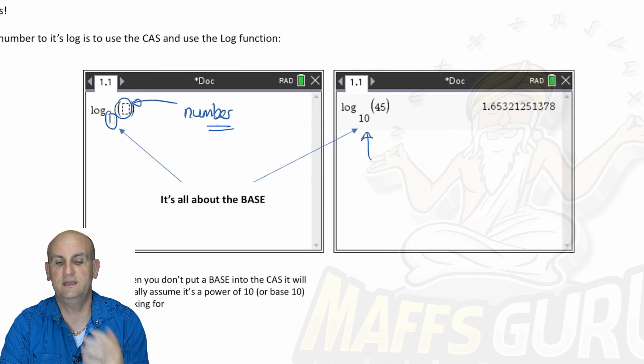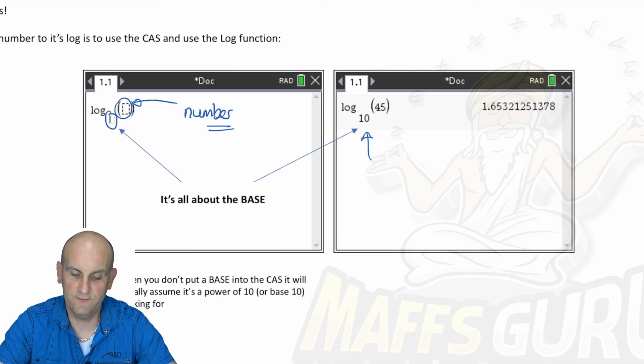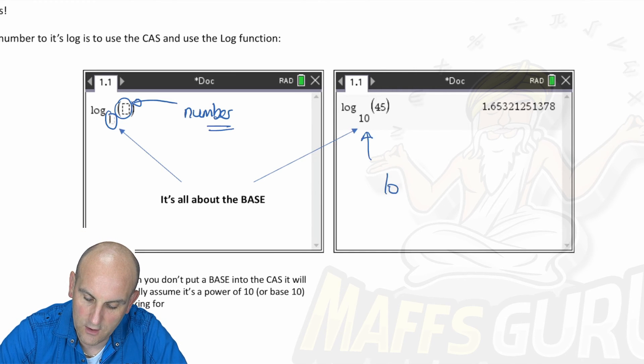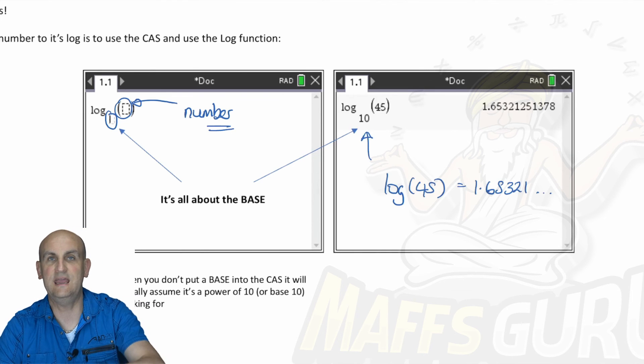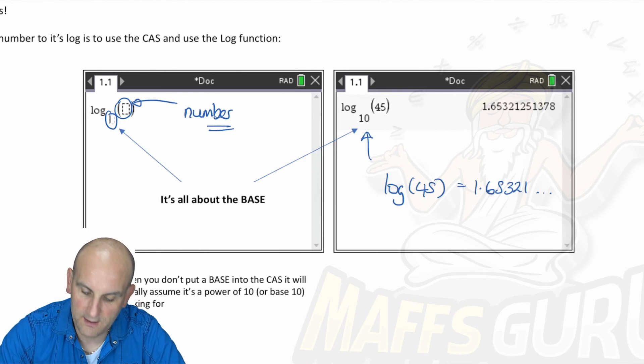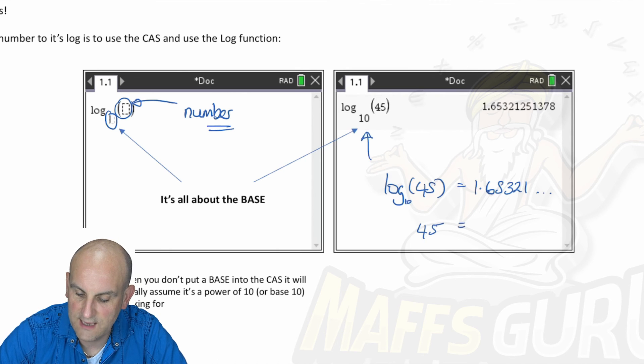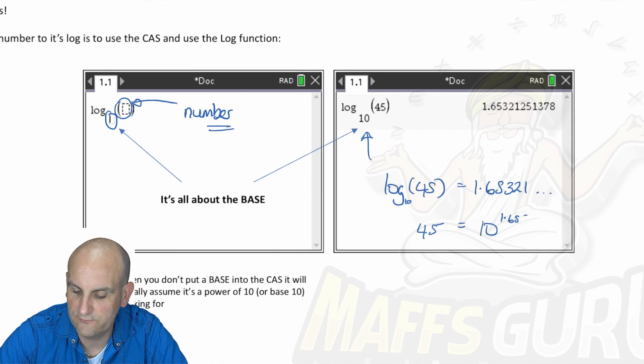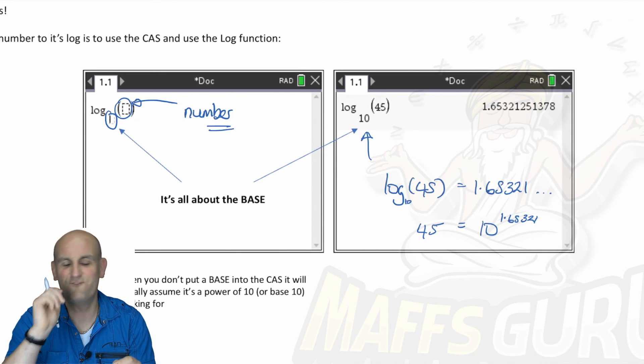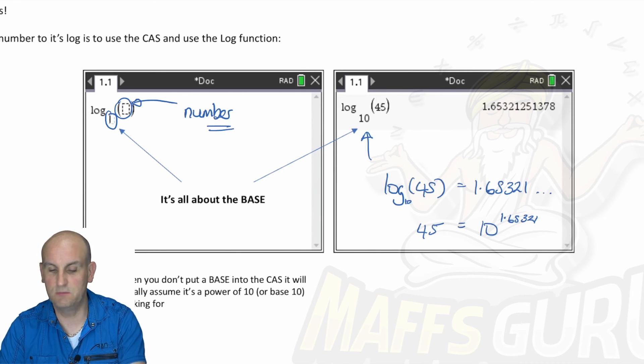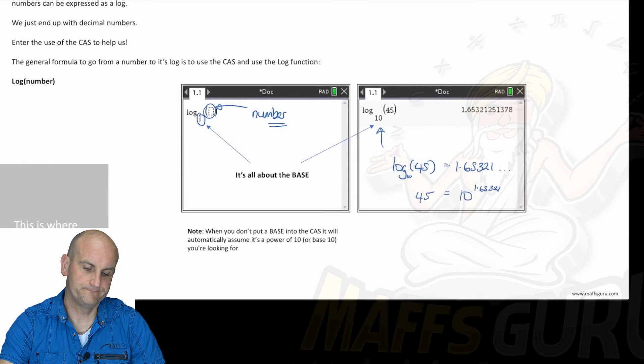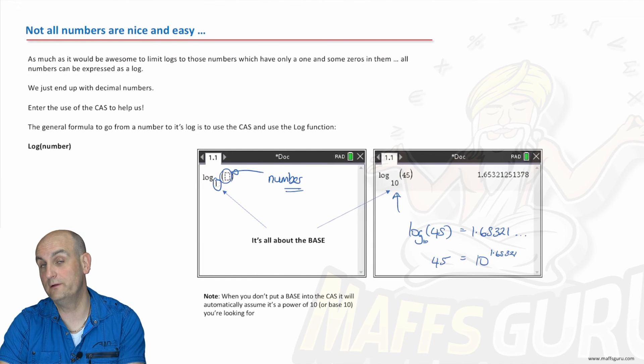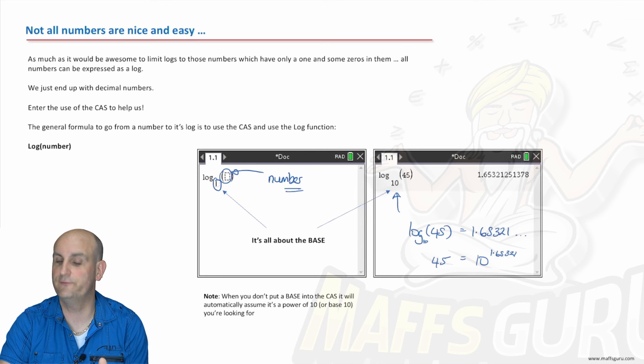Because the question I've been given says, find the log of 45, what we're now saying is that the log of 45 is equal to 1.65321 dot dot dot. Turning that on its head, what does that mean? Well, remember, that means that 45 is equal to 10 to the power of 1.65321. If you don't believe me, do 10, floaty number, 1.60 blah blah blah, and lo and behold, you will get 45. Or will you?